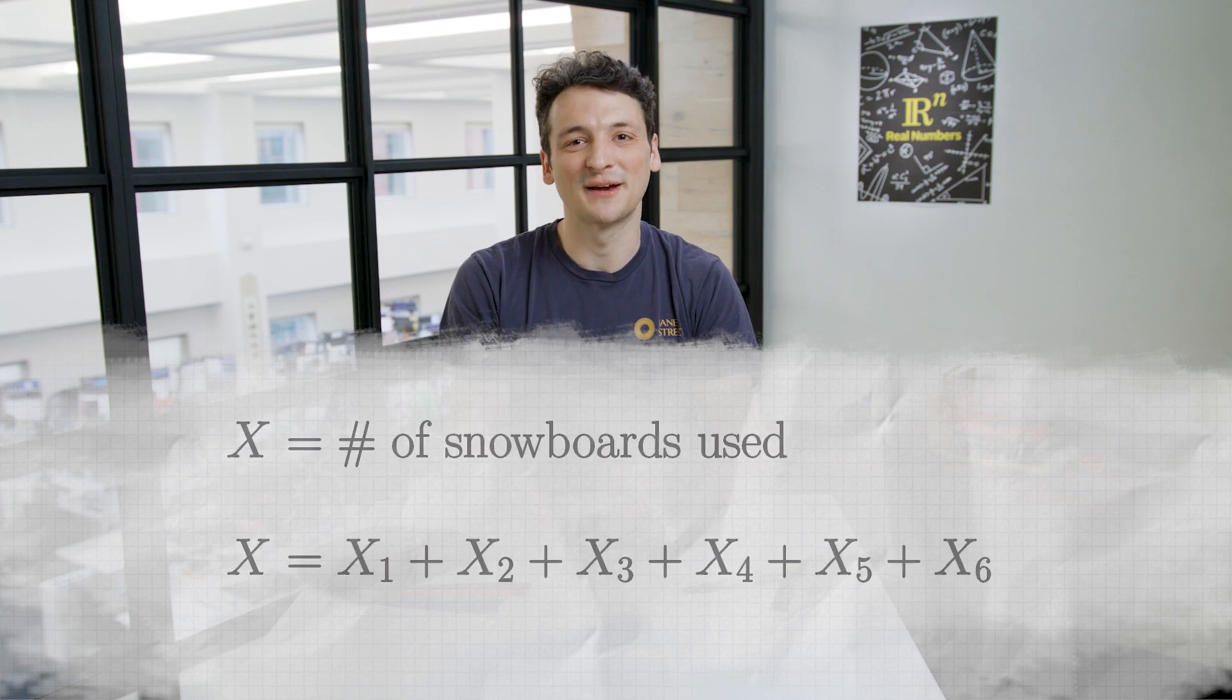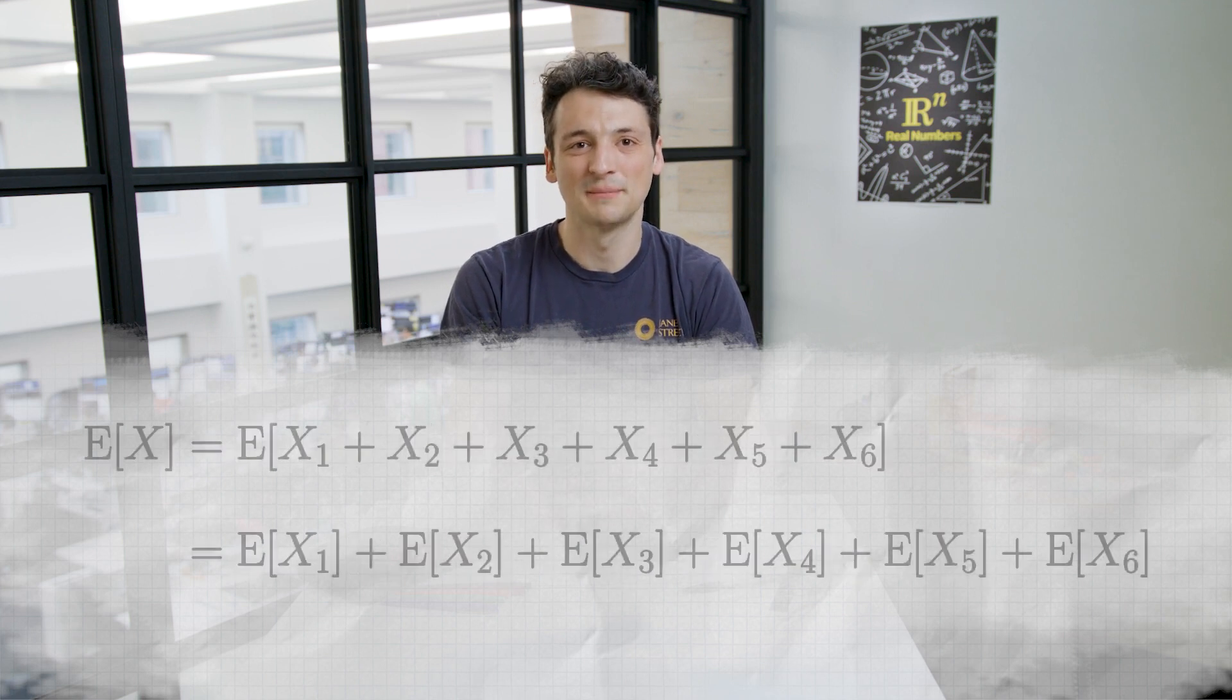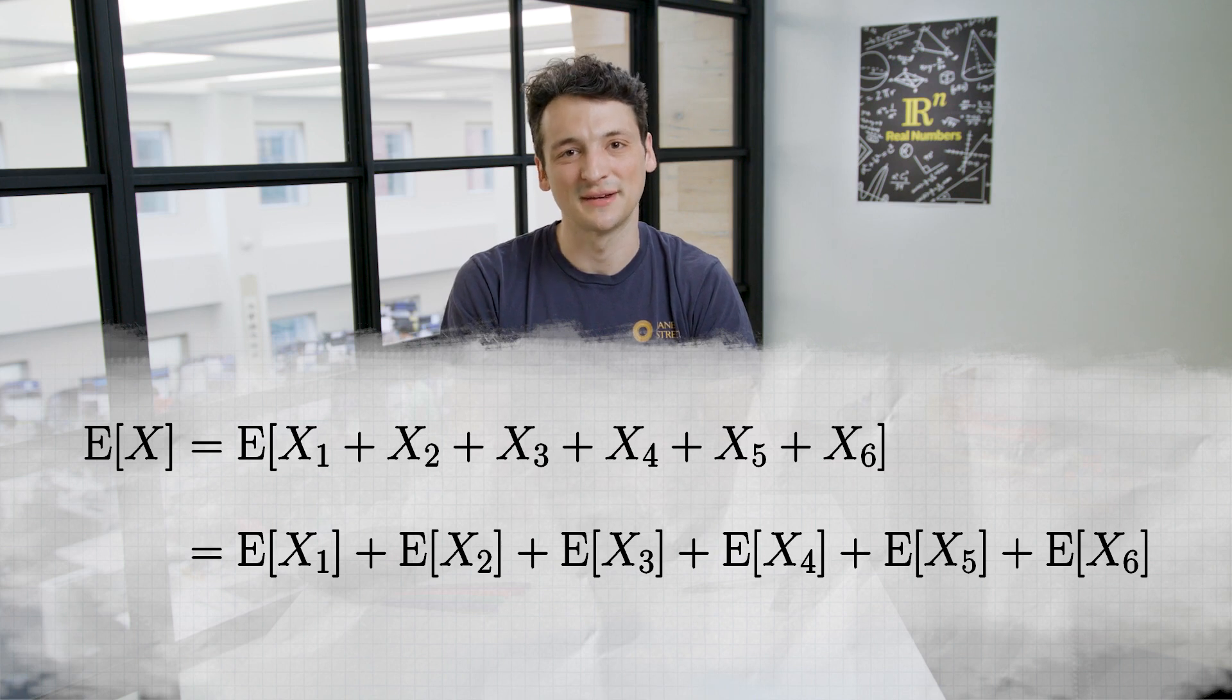We want to know the expected value on the left side of this equation, but by linearity of expectation, this is just the sum of the expected values of the indicator variables on the right-hand side.